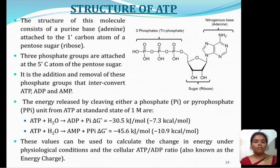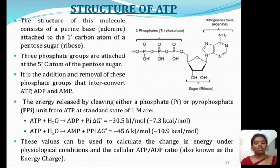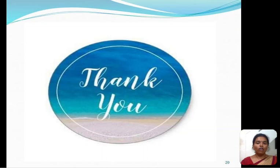It is the addition and removal of these phosphate groups that interconvert ATP, ADP, and AMP. The energy released by cleaving a phosphate or pyrophosphate unit from ATP under standard state conditions: ATP plus water gives ADP plus inorganic phosphate, with delta G approximately minus 30.5 kJ per mole. Whereas ATP plus water giving AMP plus pyrophosphate yields delta G of approximately minus 45.6 kJ per mole. These values can be used to calculate the change in energy under physiological conditions and the cellular ATP to ADP ratio, also called the energy charge. Thank you for listening.